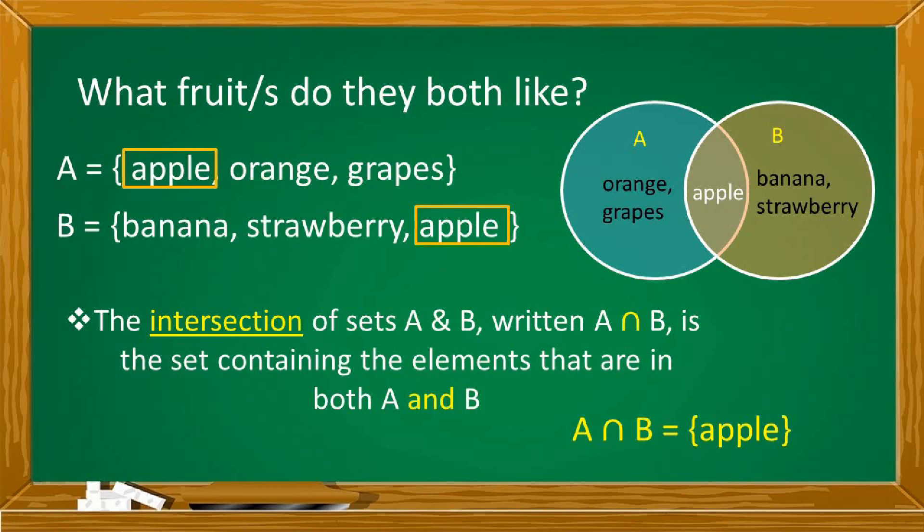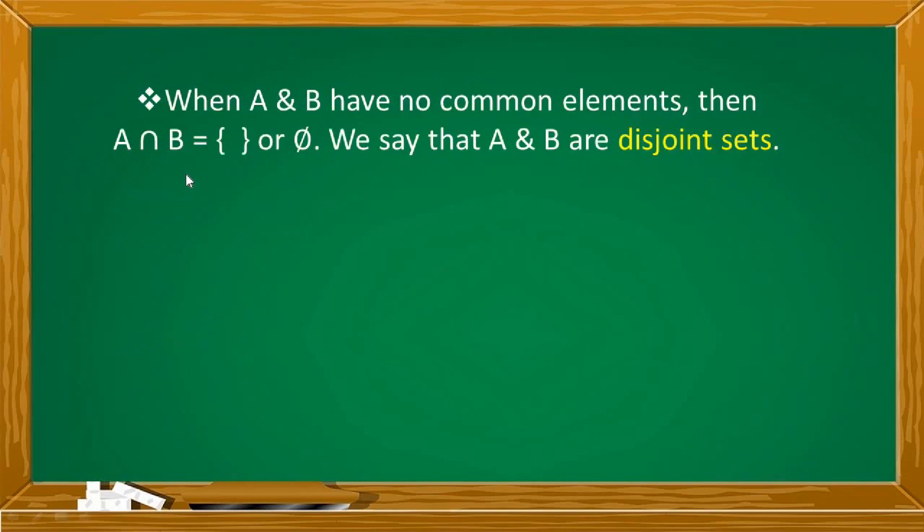Sa gitna nilalagay lahat ng magkatulad na elements ng mga sets. A intersection B is equal to apple. When A and B have no common elements, then A intersection B is equal to an empty set or a null set. We say that A and B are disjoined sets.